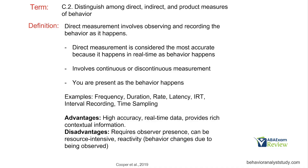Let's start with direct measurement. Direct measurement is the best measurement, though things are not always cut and dry — sometimes direct measurement might not be best for one reason or another. In general, however, direct measurement is considered the most accurate because it happens in real time as the behavior happens. We are observing and recording the behavior as it happens. It's a key characteristic of direct measurement.